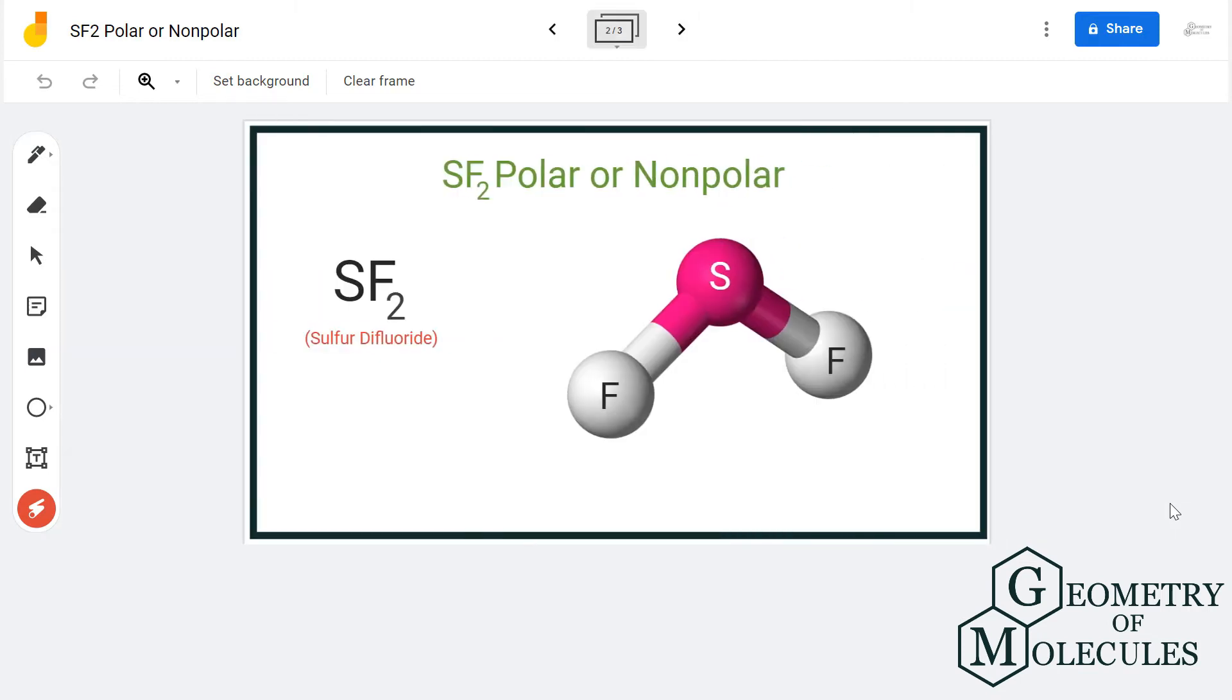Because of these two lone pairs, the shape is not linear for this molecule. Both these lone pairs have repulsive forces which are pushing fluorine atoms downwards, hence creating a bend in the shape.